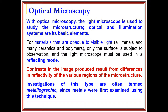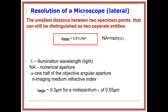After the etching, depending on your contrast, the reflection is totally different. Investigations of this type are often termed metallography, since metals were examined using this technique. The subsequent microstructural observation is called macrography. The major point to remember here is that the reflectivity of various regions is produced in the microstructure by light.